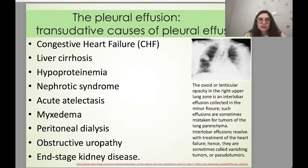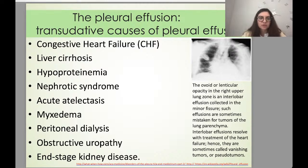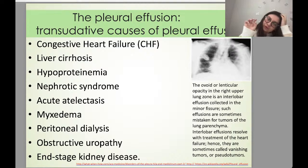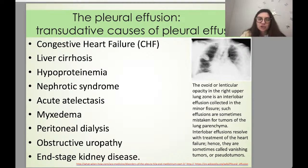Transudative causes of pleural effusion — when we find transudate in the pleural cavity — are usually secondary to chronic disorders: congestive heart failure, liver cirrhosis, hypoproteinemia, nephrotic syndrome, acute atelectasis, myxedema, peritoneal dialysis, obstructive uropathy, and end-stage kidney failure. An interesting chest X-ray finding is intralobular effusion in the minor fissure of the right upper lung zone — a rare situation sometimes mistaken for a lung tumor. These are called 'vanishing tumors' because they resolve with treatment of heart failure.